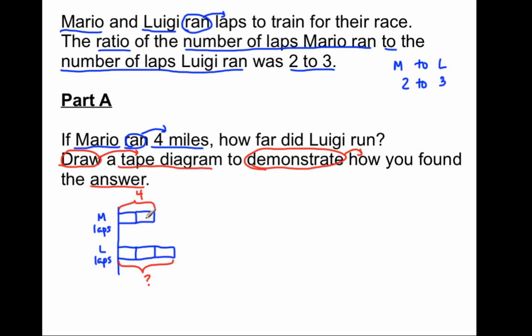So, I can either say 2 times what gives me 4, or I can say 4 divided by 2 units gives me what? So, 4 divided by 2 is equal to 2. So, each of these units, 1 unit is worth 2 miles. This is worth 2 miles. And remember, because all of these units are the same length, this is 2 miles, this is 2 miles, and this is 2 miles.